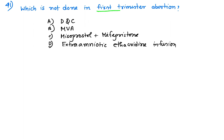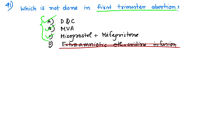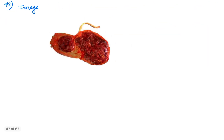The options are: dilatation and curettage — yes, it is done for first trimester abortion; manual vacuum aspiration (MVA) — yes, also done; Mifepristone and Misoprostol combination tablet — yes, also used as medication to induce first trimester abortion; extra-amniotic ethacridine infusion — no, it is NOT done as a method of first trimester abortion. So the answer is extra-amniotic ethacridine infusion.